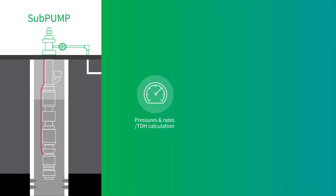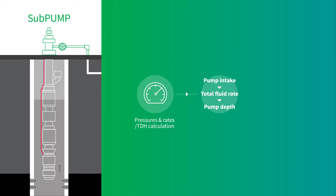The Pressure Rates tab within Subpump is the core of the ESP design. Here you are able to solve your design for pump intake conditions, total fluid rate, or pump depth. Once you select how to solve the design, the TDH will be calculated.